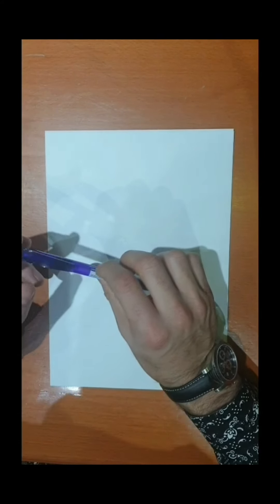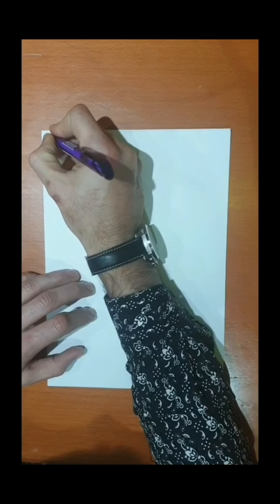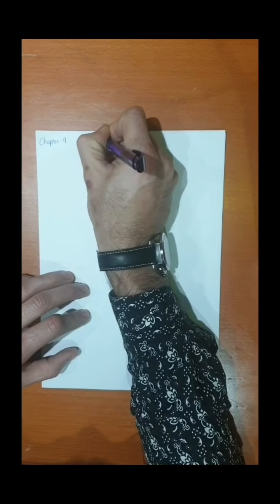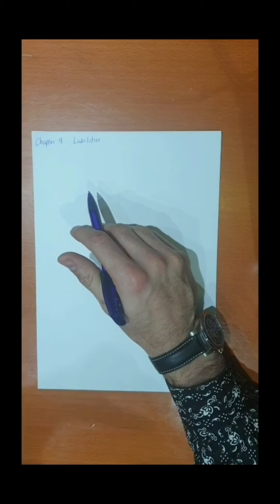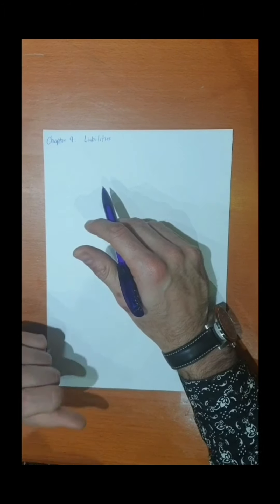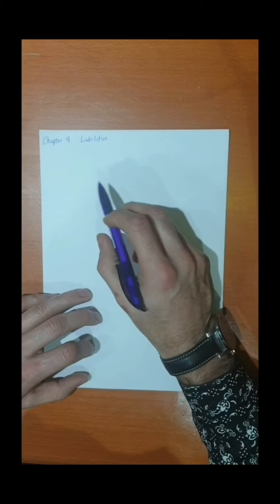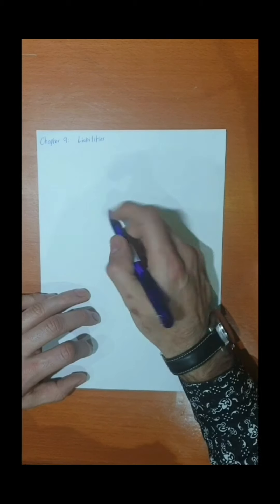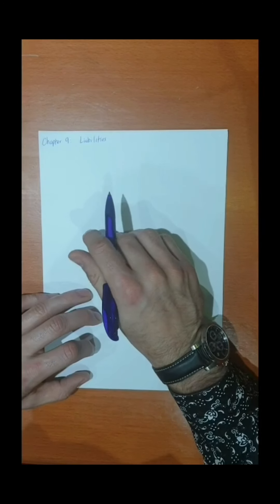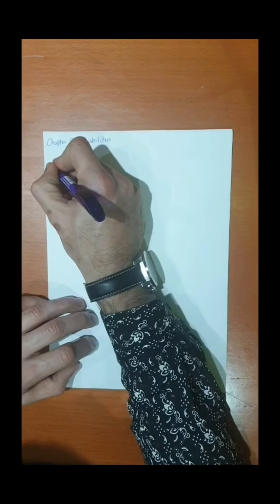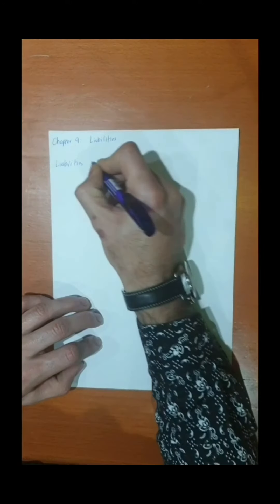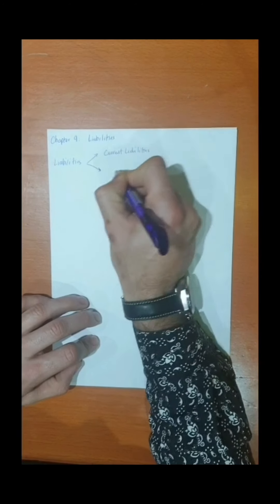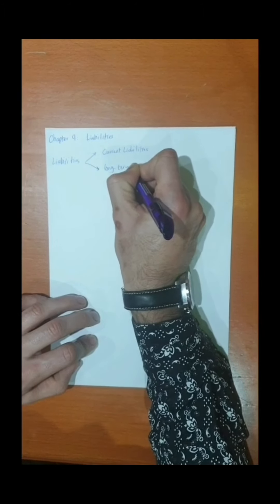Hello everyone. In this video I'm going to cover chapter nine of the financial accounting course, which is about liabilities. In the previous chapter we covered assets, types of assets, and how to depreciate, amortize, or deplete assets. Liabilities have a different structure. In the balance sheet, liabilities come second after assets, and include two main forms: current liabilities and long-term liabilities.